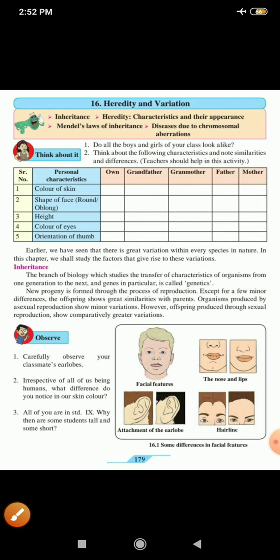Now next. New progeny, that is a young one. Progeny means a young one is formed through the process of reproduction. Except for a few minor differences, the offspring shows great similarities with parents. Organisms produced by asexual reproduction show minor variations. However, offsprings produced through sexual reproduction show comparatively greater variations.